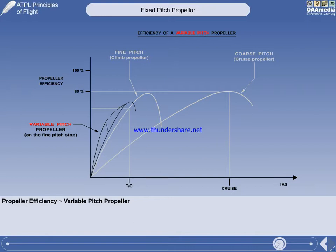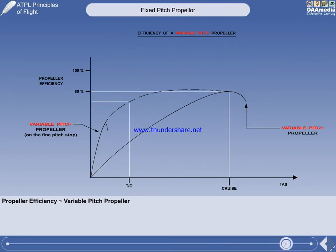And as speed increases, the efficiency increases. The increase in efficiency with increasing speed is due to the blade angle progressively increasing to maintain the optimum angle of attack.